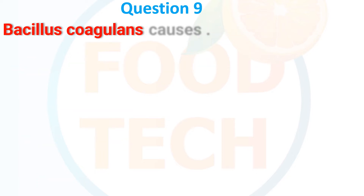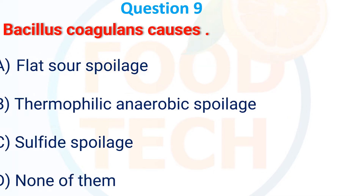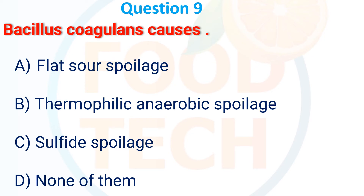Bacillus coagulans causes: A, flat sour spoilage; B, thermophilic anaerobic spoilage; C, sulfide spoilage; D, none of them. The answer is A, flat sour spoilage.